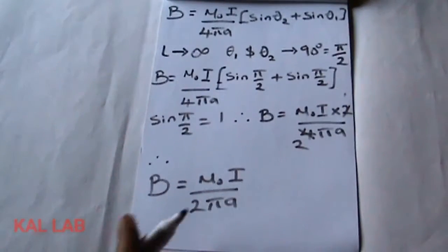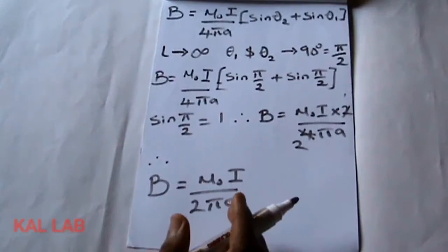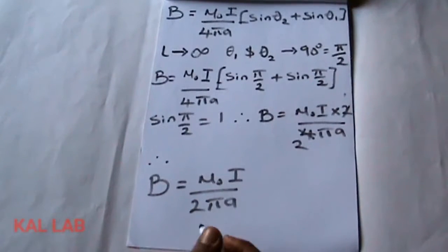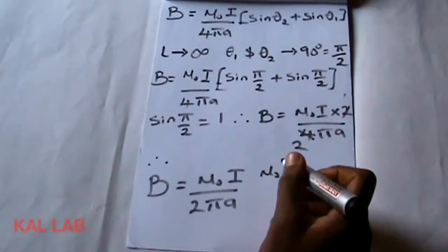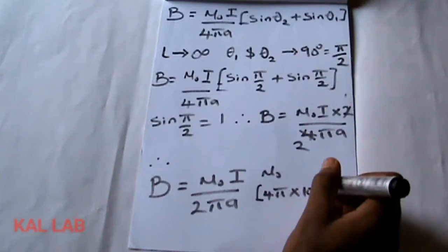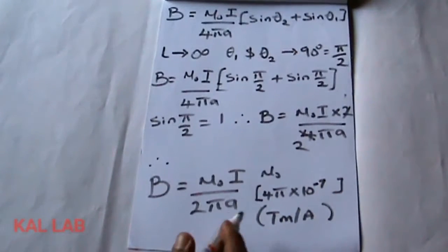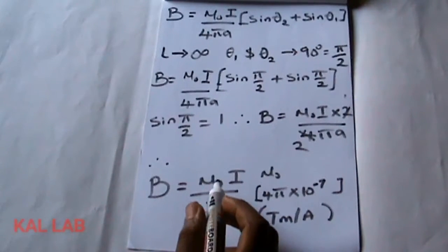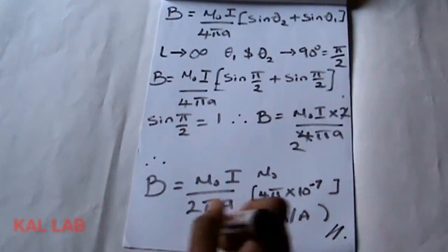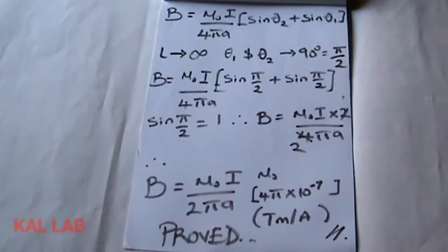So we've proved and derived the formula to calculate the magnetic field density at a point from the conductor using Biot-Savart's law. μ₀ is a constant whose value is 4π × 10⁻⁷, with units of tesla·meter per ampere. I is the current passing through the conductor and a is the distance of the point from the conductor. Thank you very much for watching — please subscribe to my channel, drop a like, and leave a comment.